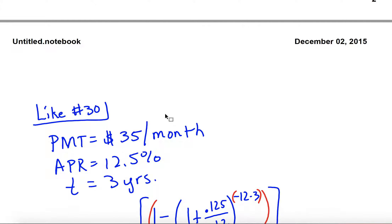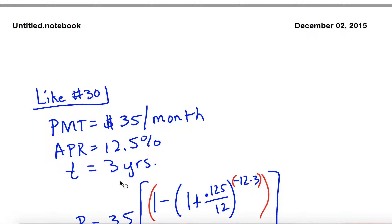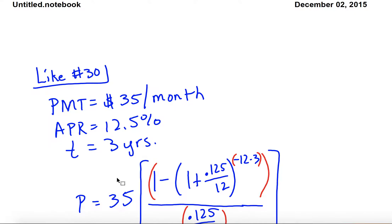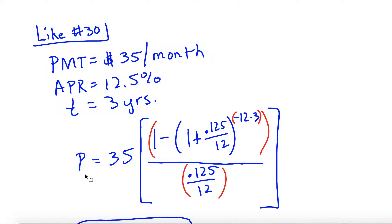Let's take an example. Say you have a payment of $35 per month and your APR is 12.5%, because loans usually charge you a lot more than savings accounts will pay you. You're going to pay this for three years. You want to find out what your present value is — how much you actually started with. So present value is what we're solving for.